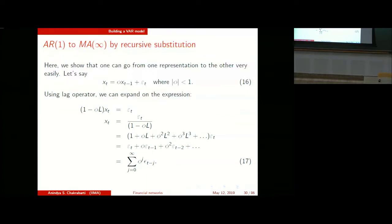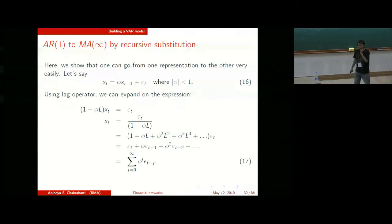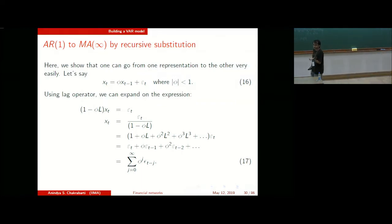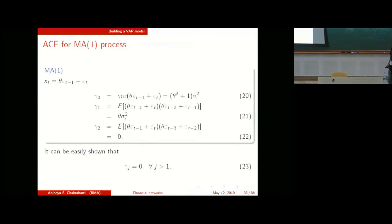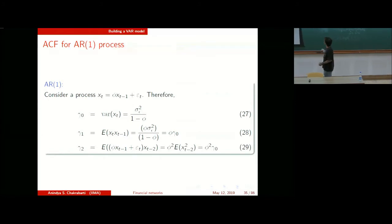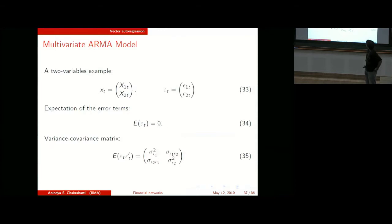If phi equals exactly 1, this process is called a random walk in discrete time. In that case it will have an unbounded variance that is a function of t, so the unconditional variance is basically infinity. Now let me get to something more important that will allow us to talk about networks.